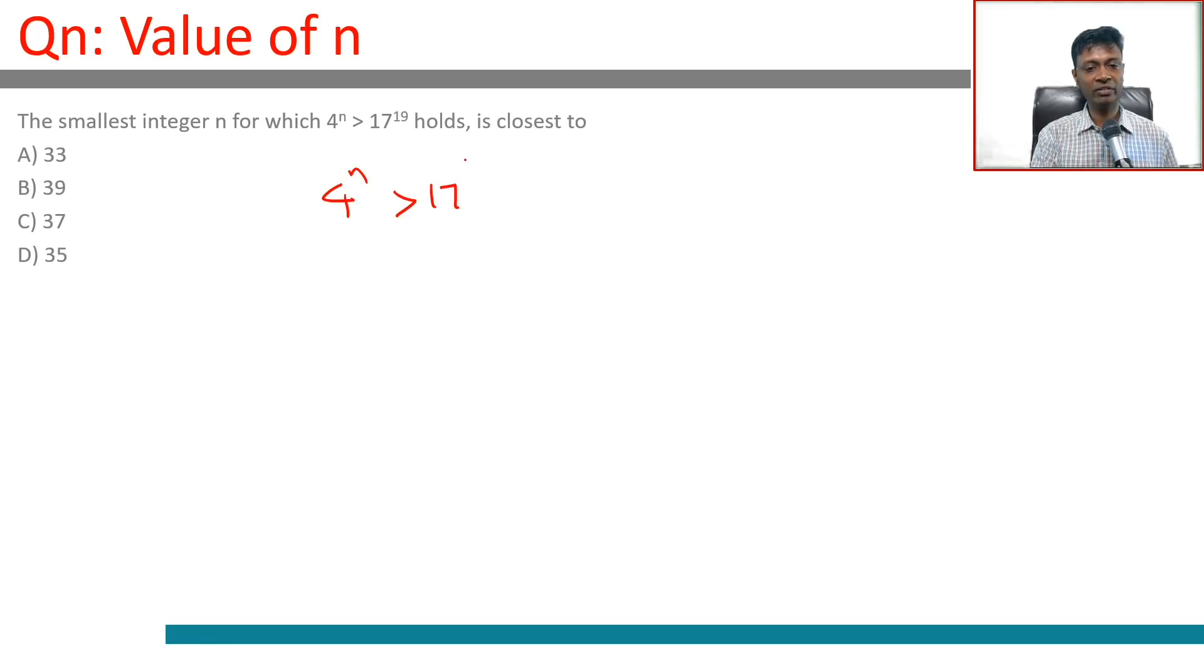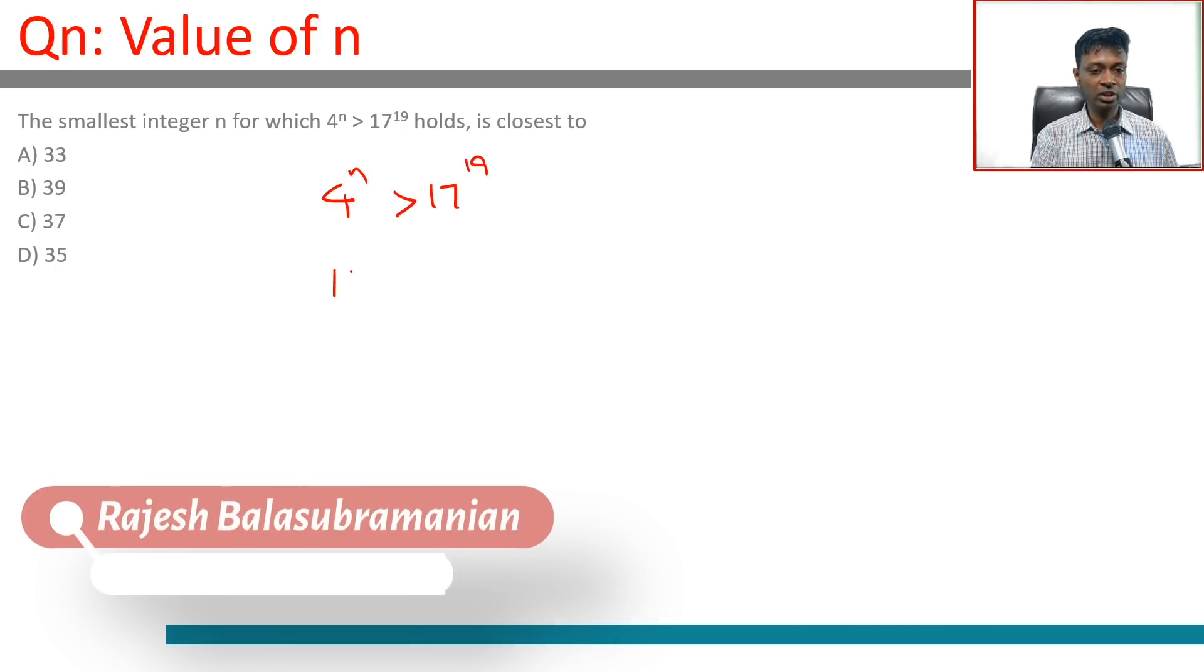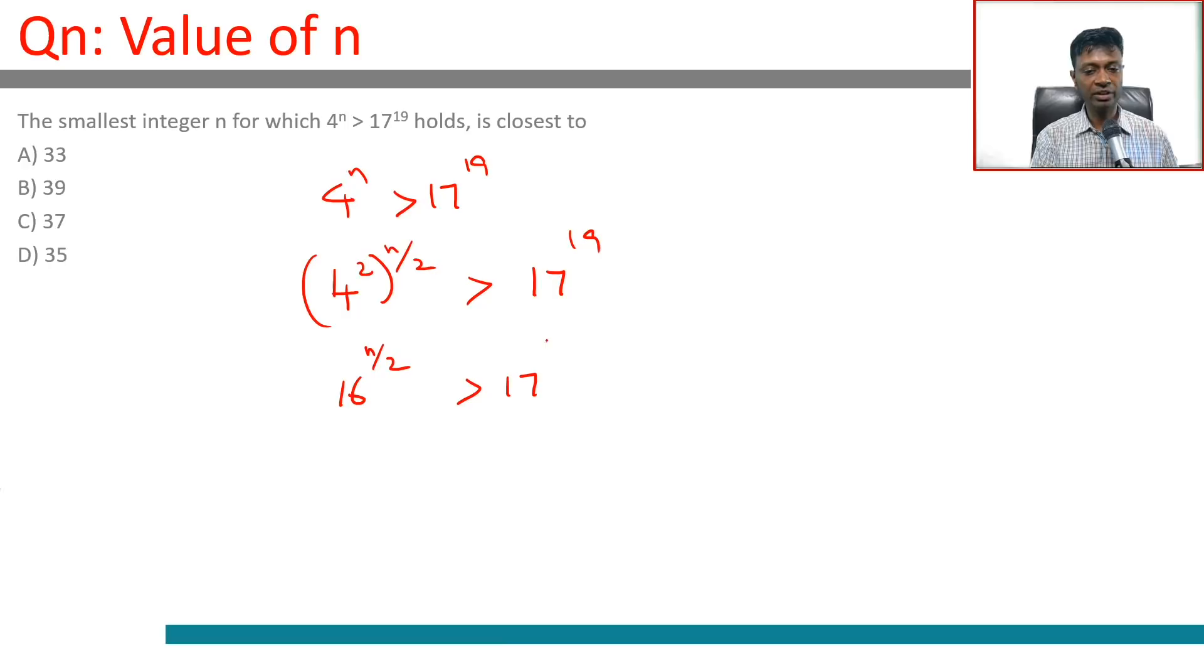4^n is greater than 17^19. I'm going to write this as (4²)^(n/2) is greater than 17^19. So 16^(n/2) is greater than 17^19.